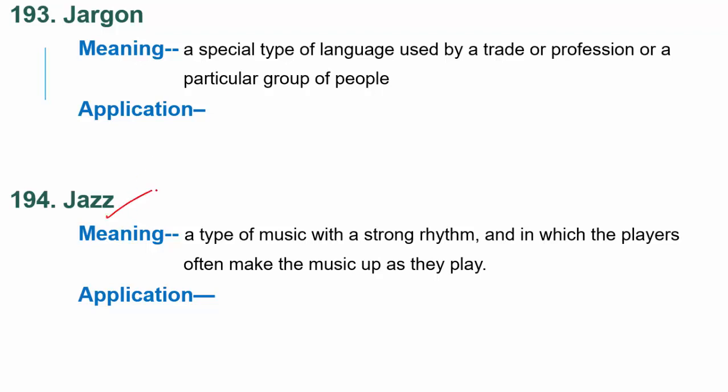Next word is jazz. Jazz is a type of music with a strong rhythm and in which the players often make the music up as they play. Jazz ek tarah ka music hota hai jismein jo rhythm hoti hai woh kaafi strong hoti hai, aur jaise jaise woh log play karte jate hai na, woh music banate jate hai haath ki haath. So he is expert in playing jazz — he is the badshah of jazz.